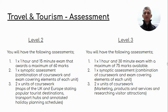In terms of assessment, there is a slight difference between the two courses. Our Level 2 course requires students to complete a one hour and 15 minute exam for Unit 1, marked out of 60. There is also one synoptic assessment, which is a combination of coursework and an exam covering elements from the other units. You also have two units of coursework relating to maps of the UK and a map of Europe, where you state the main transport hubs, main attractions, and capital cities, and create a holiday plan and schedule as if you were a travel agent.